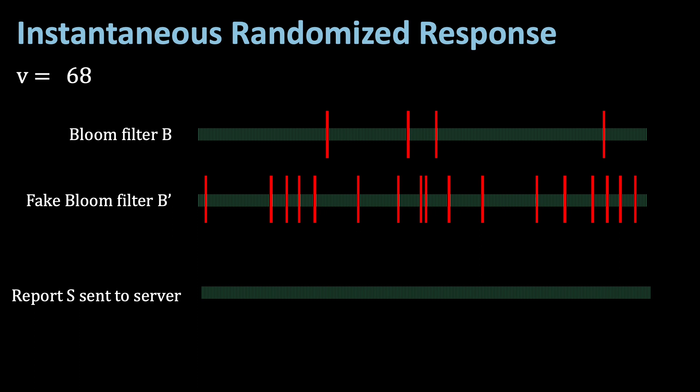Instantaneous randomized response means that now a second bit array of the same size is allocated and all bits are set to 0. And this is the final report which is sent to the server. And this report is called S.